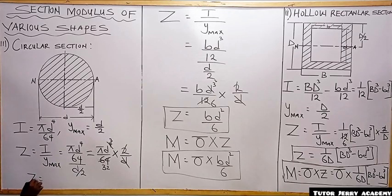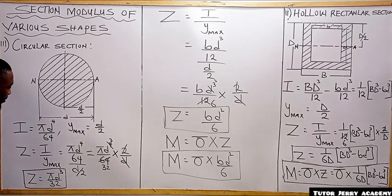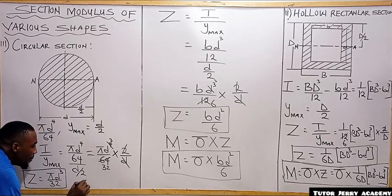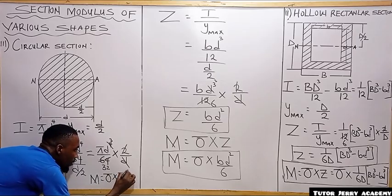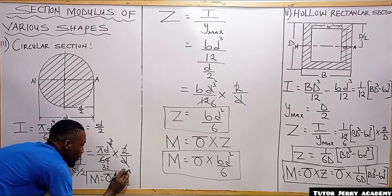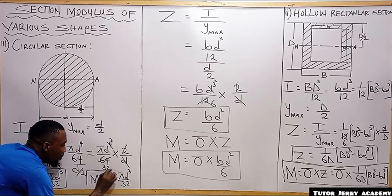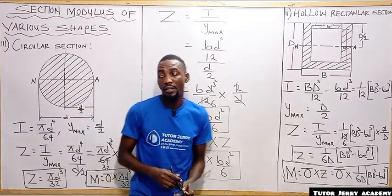Therefore the section modulus for a circular section is Z = πd³/32. We can also apply this to find the maximum bending moment: M = stress × Z = σ × πd³/32. This is the formula for the maximum bending moment for a circular section.